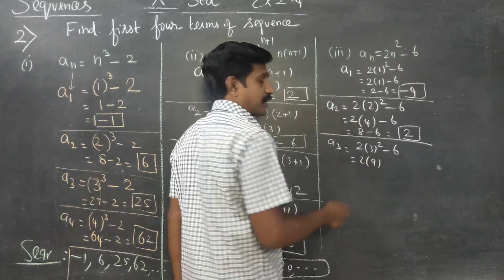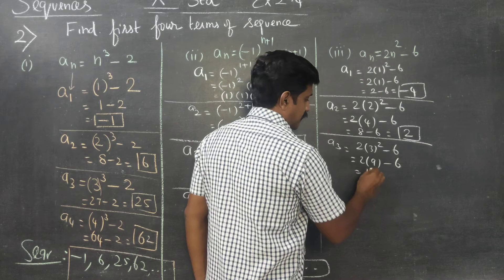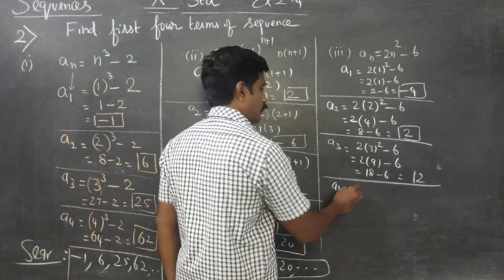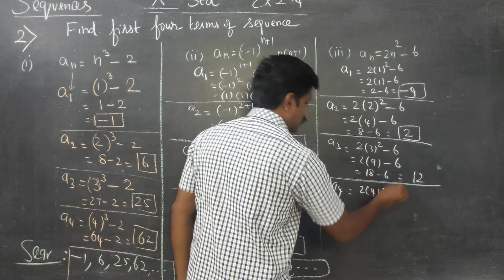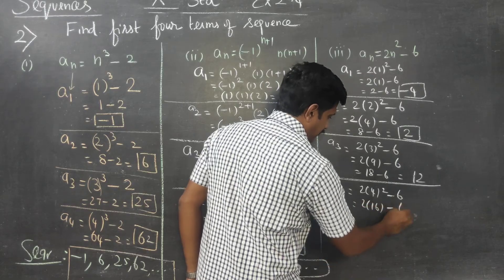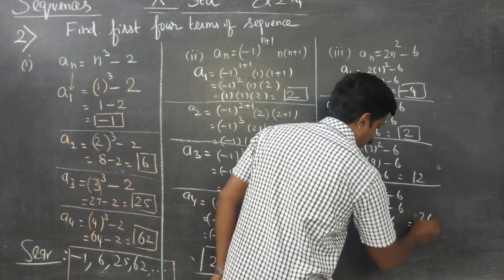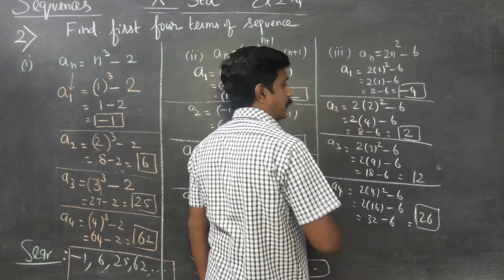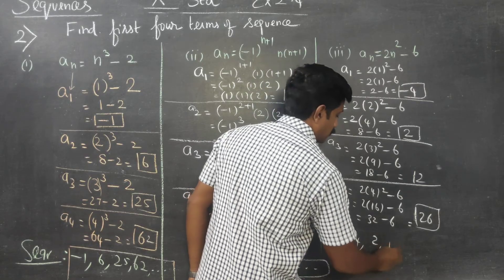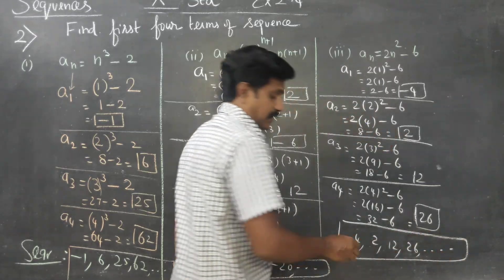Coming to A3: 2 into 3² minus 6 = 2 into 9 minus 6 = 18 minus 6, answer is 12. Last term A4: 2 into 4² minus 6 = 2 into 16 minus 6 = 32 minus 6, answer is 26. The answer in sequence: -4, 2, 12, 26, ... This is your third answer.